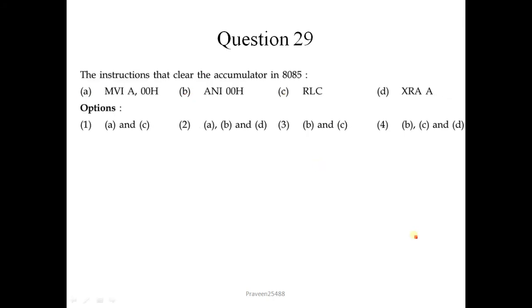Question number 29: the instructions that clear the accumulator in 8085. The first instruction is MVI A, 00H — the data 00 in hexadecimal is immediately moved into the accumulator, making the accumulator content 00, which clears it. The second one is ANI 00 — the accumulator contents will be logically ANDed immediately with 00, so it will also make the accumulator 00. This is also correct.